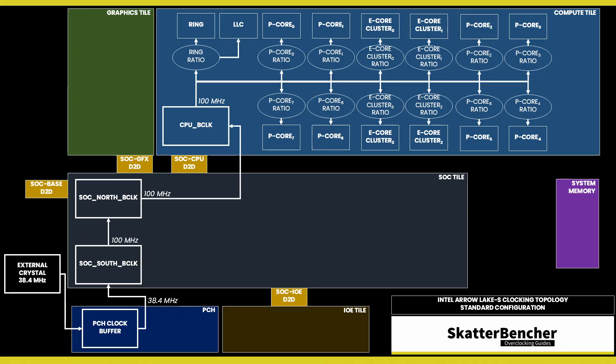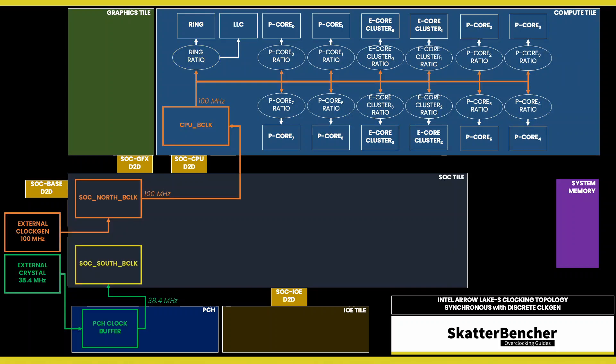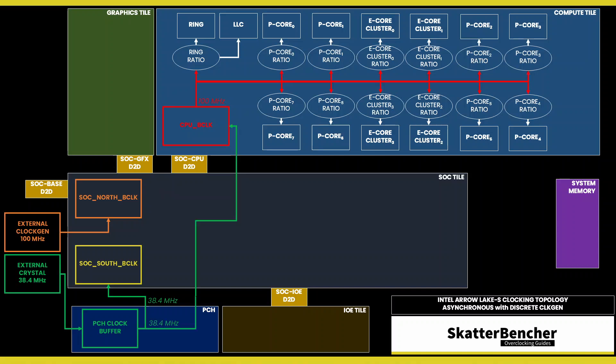There's a reference clock that gets multiplied by a ring ratio. The 100 MHz reference clock frequency is generated internally by the CPU PLL. This clock affects all IP blocks in the compute tile, including the P-Cores, E-Cores, and ring. This PLL can be linked to the SOC PLL when you run it in synchronous mode, or work independently if you run it in asynchronous mode.